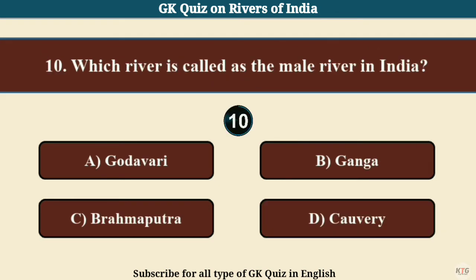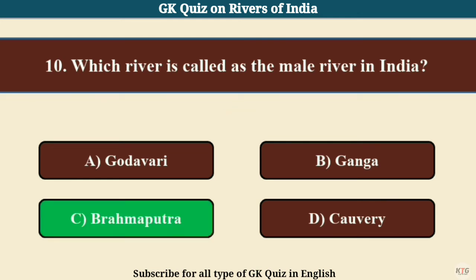Question No. 10. Which river is called the male river in India? Answer C: Brahmaputra.